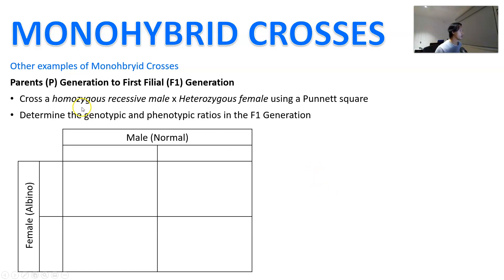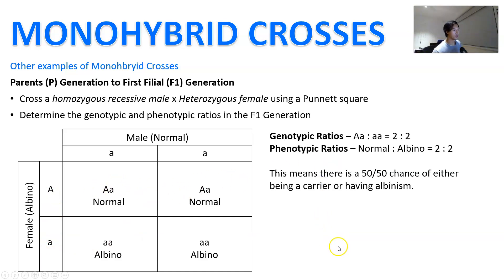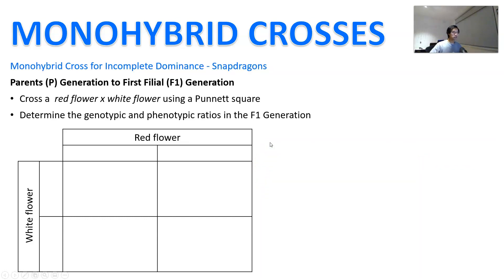Let's do another example: a homozygous recessive male crossed with a heterozygous female. Homozygous recessive is aa and the female is Aa. You get a 50/50 chance of being normal or albino. The genotypic ratio is 1:1 for Aa to aa, and the phenotypic ratio is 1:1 normal to albino — a 50% chance of either being a carrier or having albinism.